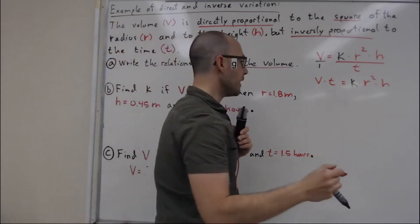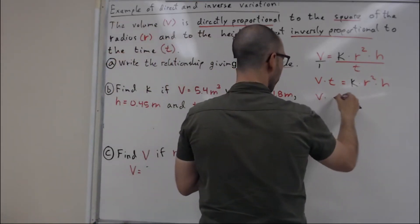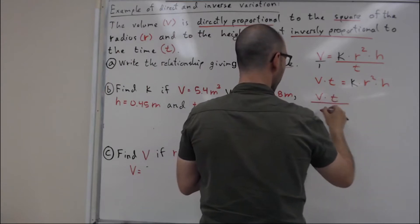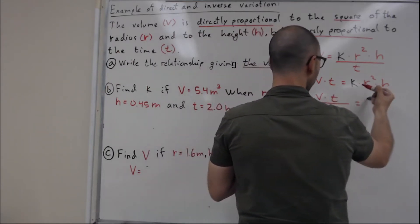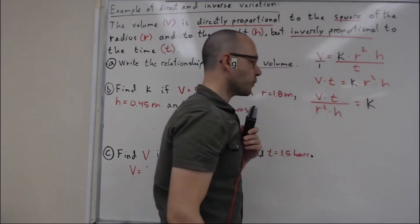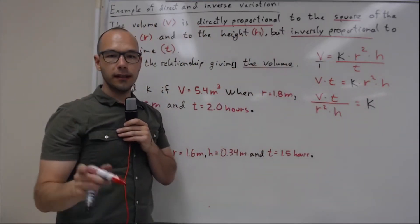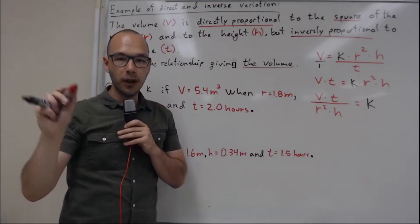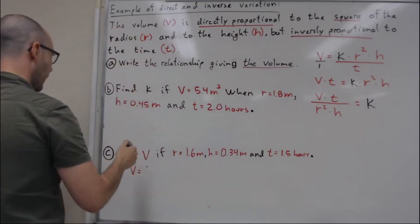And then to isolate my k, I will divide by r squared h. So it's going to be V multiplied by t divided by r squared h, that is equal to k.